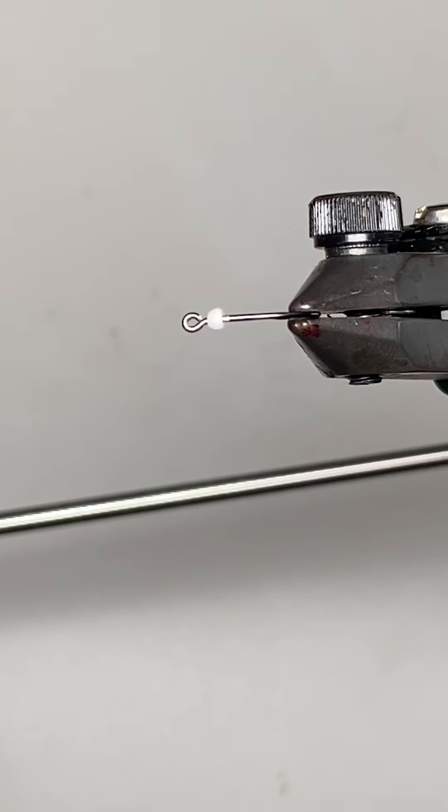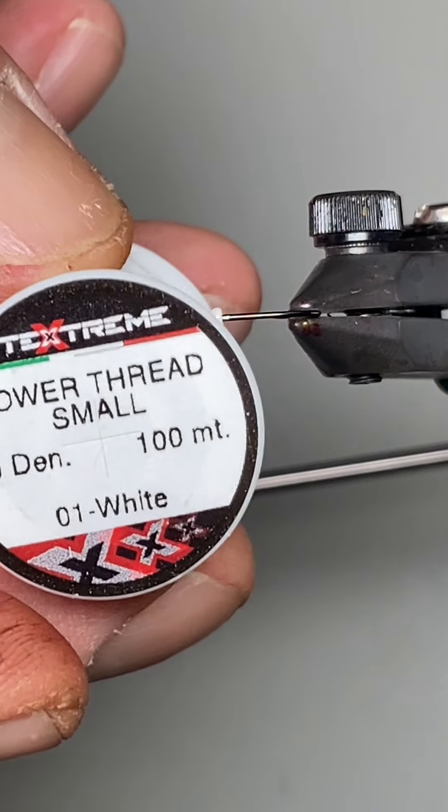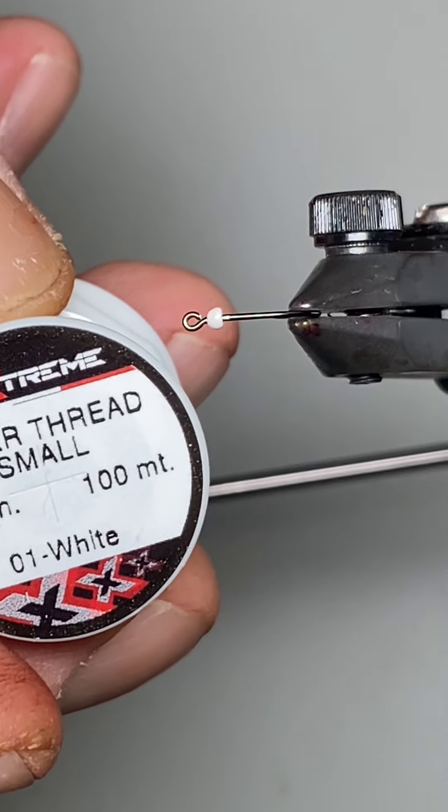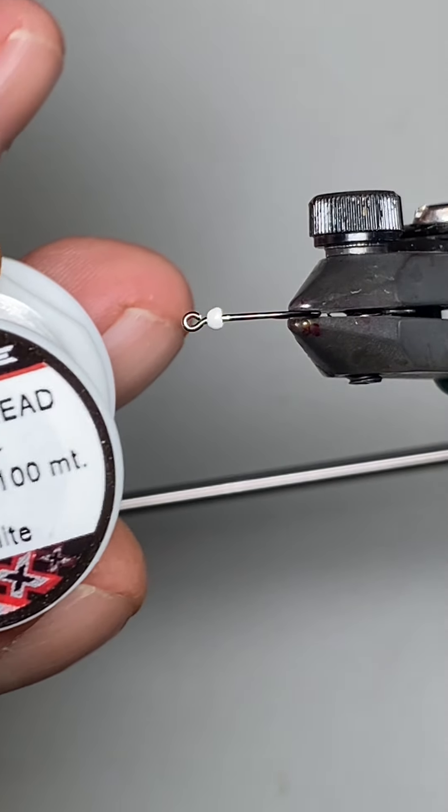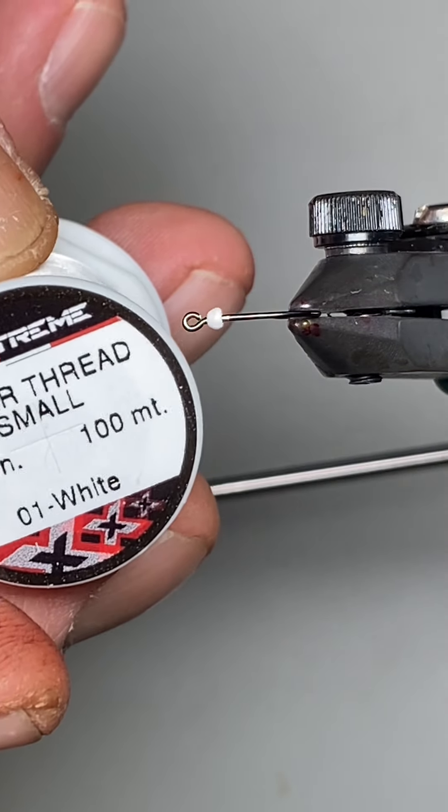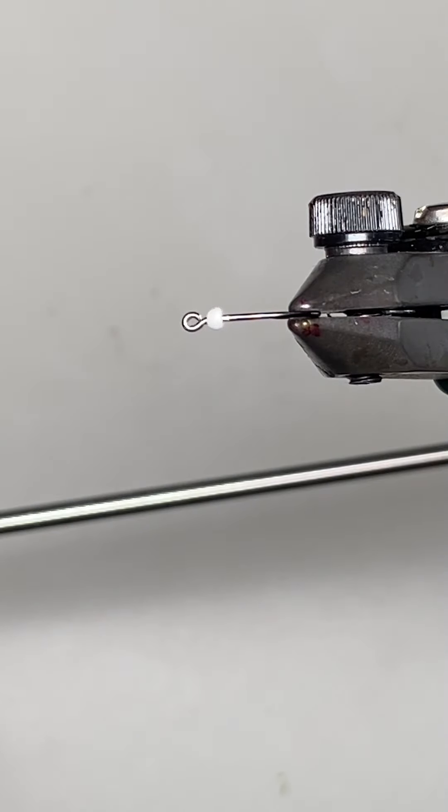So the first consideration is your tying thread and I use a product from TechStream called PowerThread. So this is the small version. It's a 50 denier. It's extremely strong. You probably will never break it when you're tying. It doesn't fray and it spins out flat very easily. Probably the single biggest thing that changed my tying and made me a better tier was going to this thread.